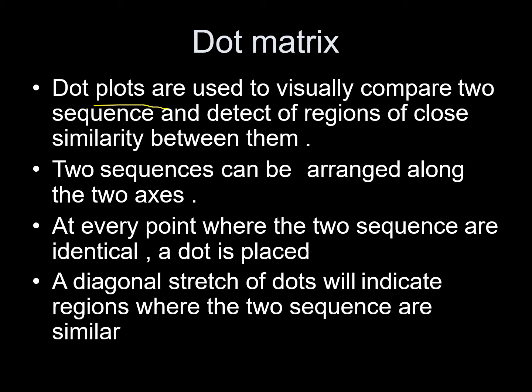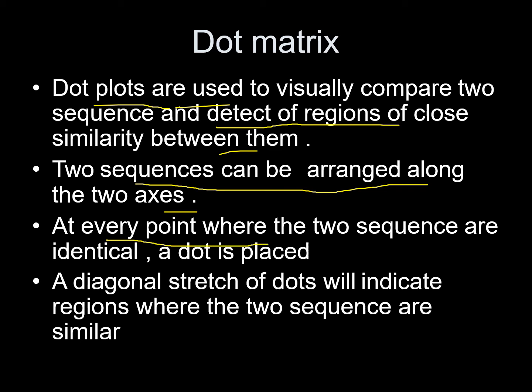Dot plots are used to visually compare two sequences and detect regions of close similarity between them. Two sequences can be arranged along two axes, mainly Y and X, and at every point where the two sequences are identical, a dot is placed. This is where the implementation of dot matrix comes into play — wherever we find any identity or similarity between two sequences, we place a dot.